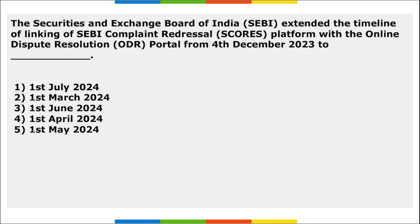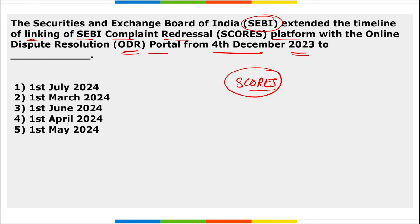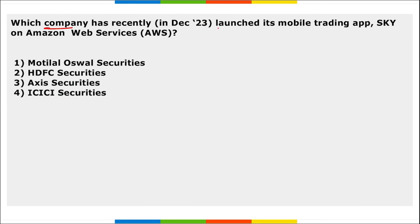Next: SEBI extended the timeline for linking the SEBI Complaints Redressal platform (SCORES) with the Online Dispute Resolution (ODR) portal. The earlier deadline was 4th December 2023; it has now been extended to 1st April 2024. By this date, these two platforms will be merged.